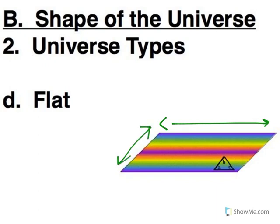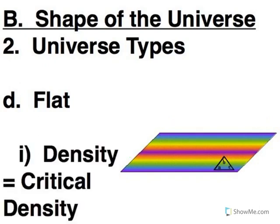So what causes a universe to be flat? Well in this case you've got a density equal to critical density. So in some ways this is kind of like Goldilocks, this is the just right universe in some respects because it does fall right in the middle of the extremes.